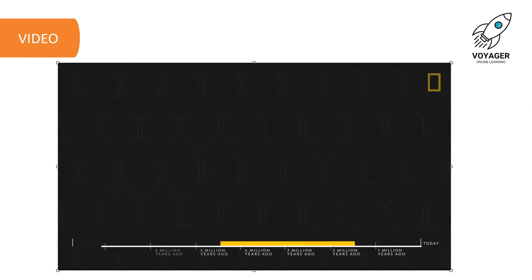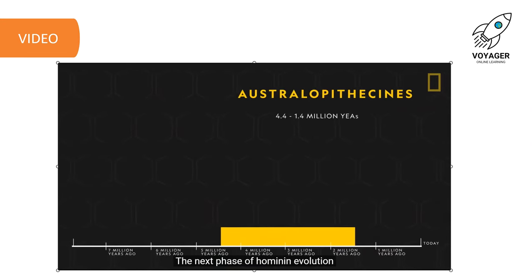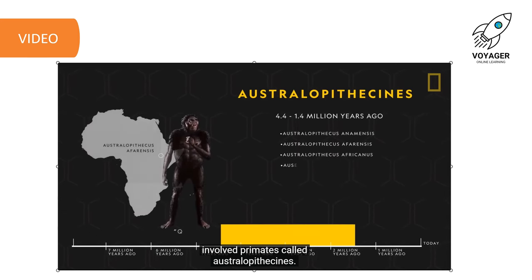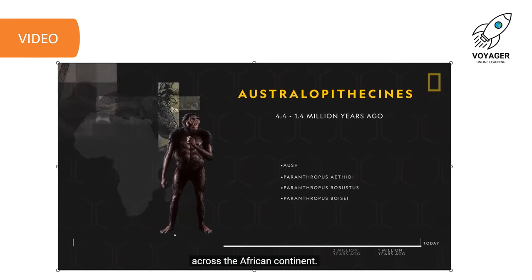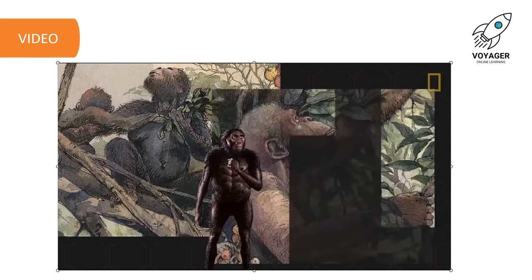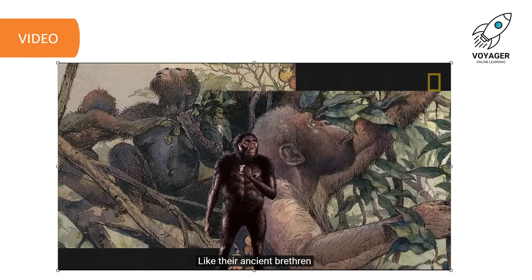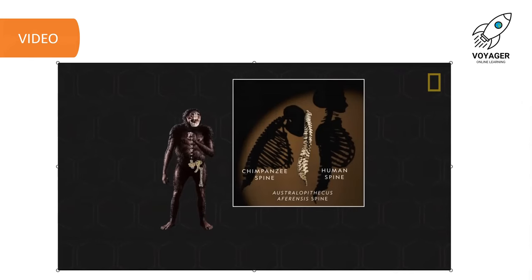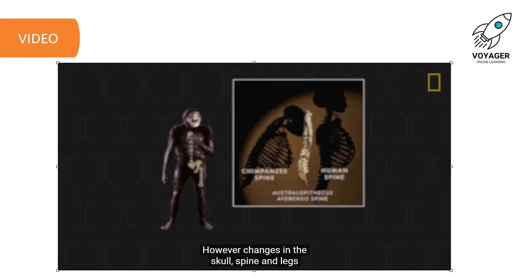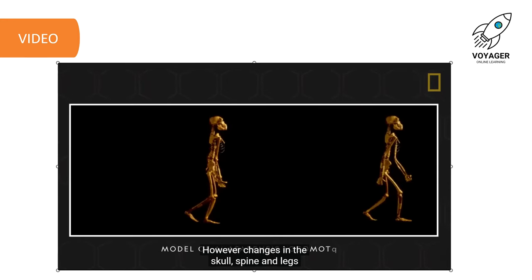The next phase of hominin evolution involved primates called australopithecines, who lived between 4.4 and 1.4 million years ago across the African continent. Like their ancient brethren, australopithecines had some ape-like traits. However, changes in the skull, spine and legs indicate a notable shift toward a very human-like trait: consistent bipedal locomotion.